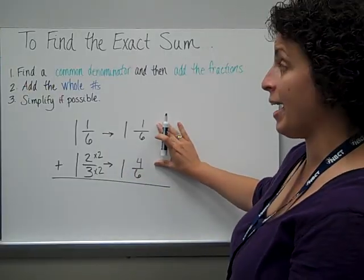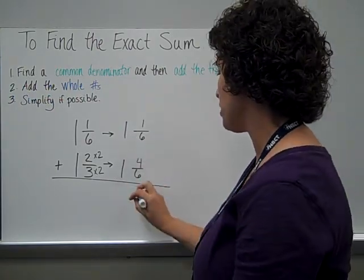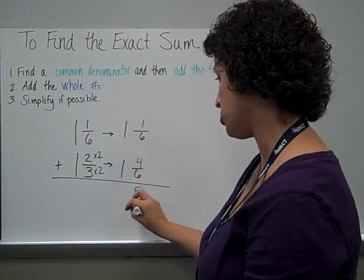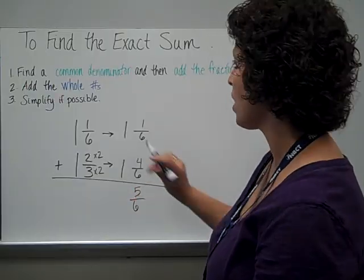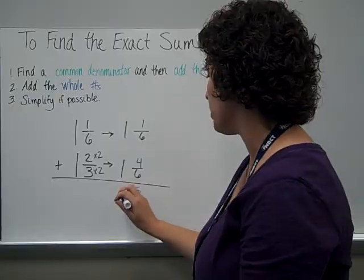So now I'm ready to add the fractions, which is when we add the numerators. So 1 plus 4 is 5. Denominator stays the same. And then I'm ready to do step 2, add the whole numbers. 1 plus 1 is 2.